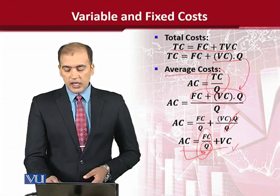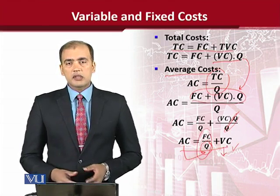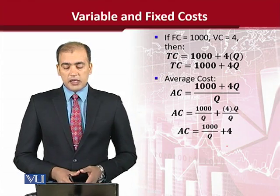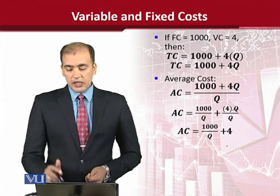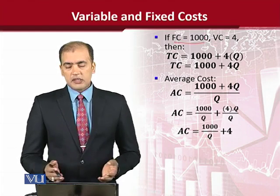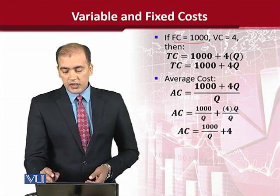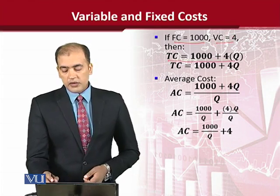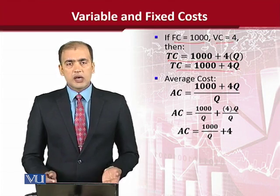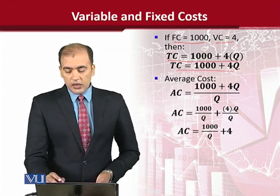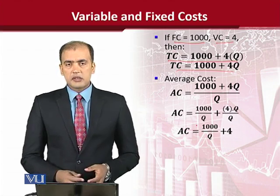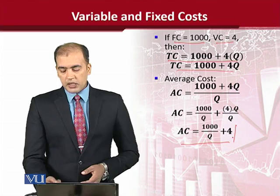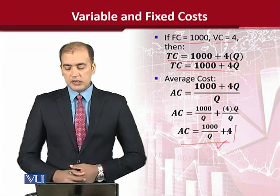Average cost में एक variable part और एक fixed part होती है, क्योंकि variable cost इस case में per unit price है — इसके अंदर से variable cancel out हो गया. एक numerical instance: अगर fixed cost 1000 rupees हो और variable cost per unit 4 rupees हो, तो total cost का formula transform होकर TC = 1000 + 4Q बन जाएगा. Average cost भी हम calculate कर सकते हैं simply by dividing total cost with the output.